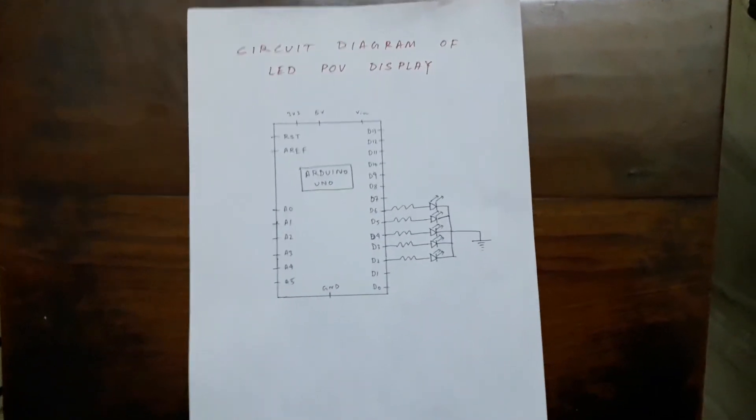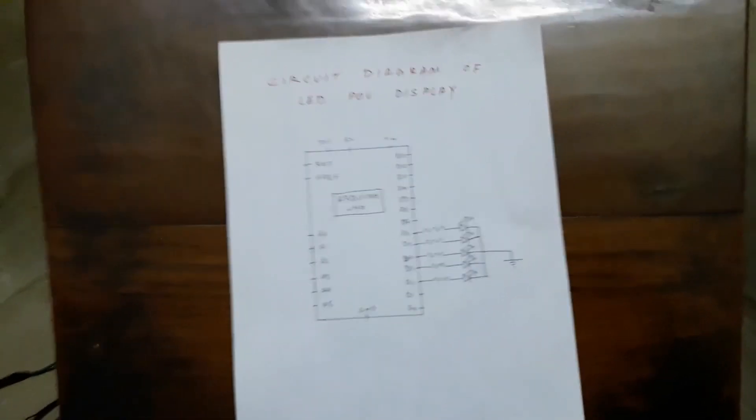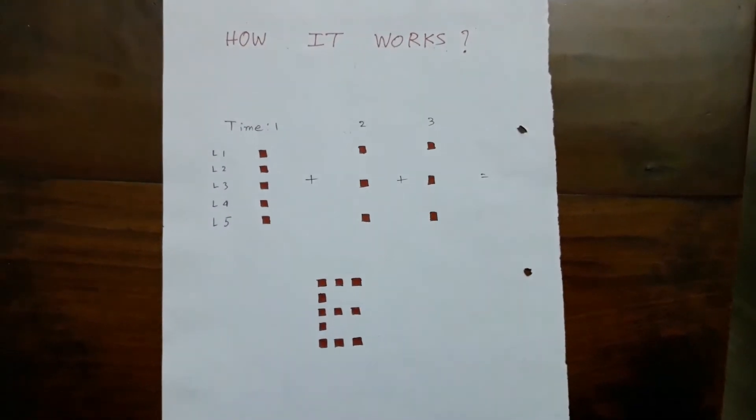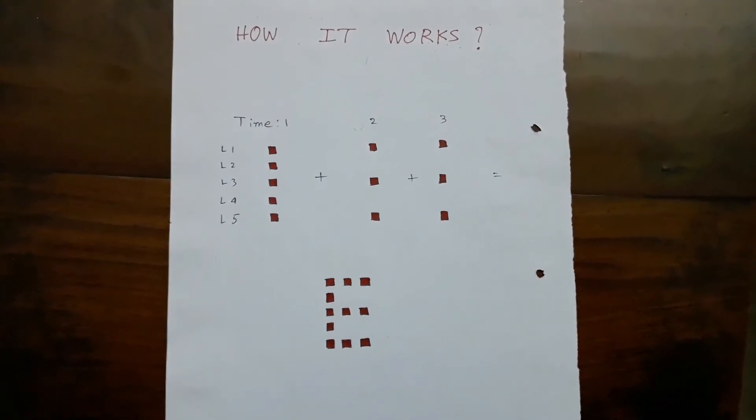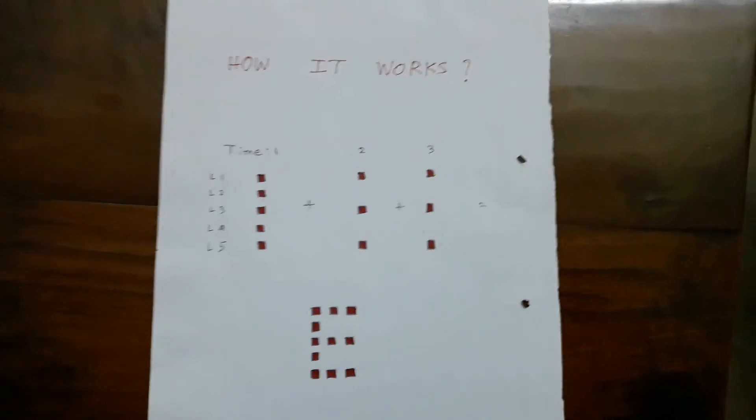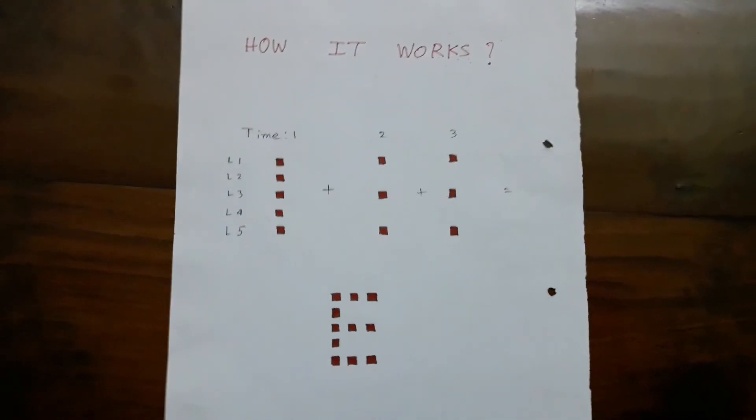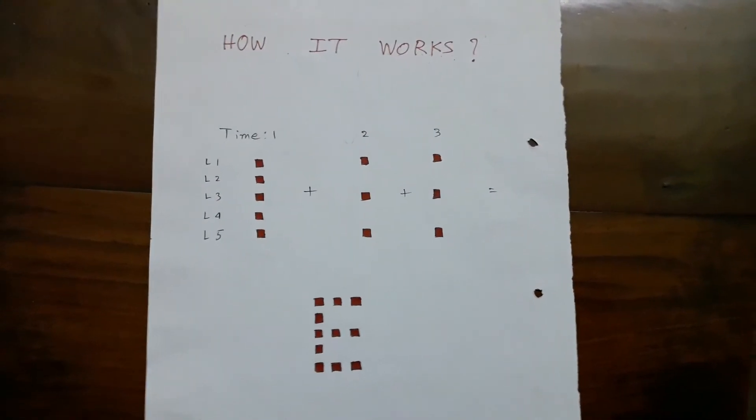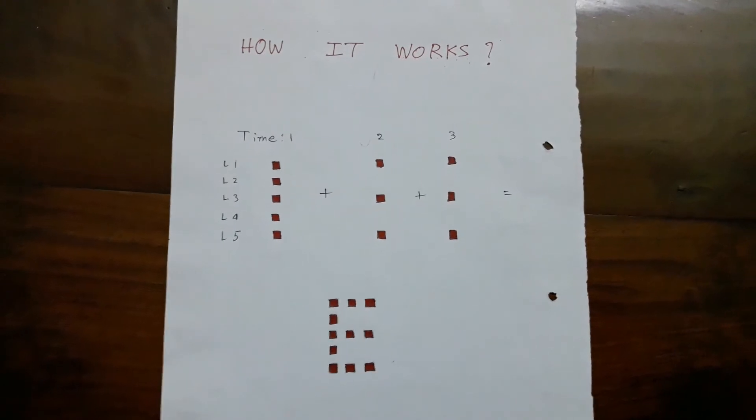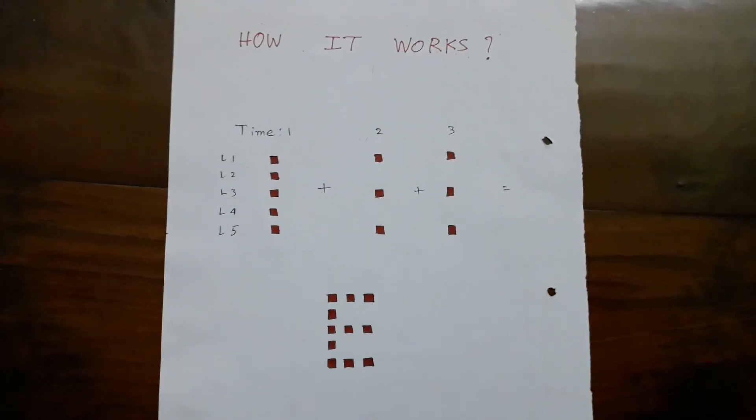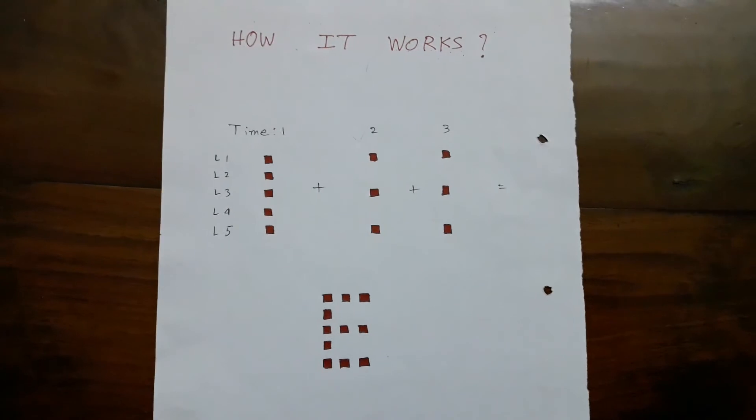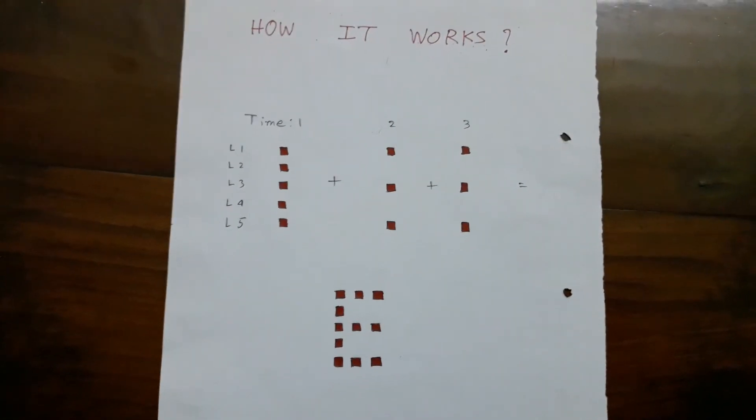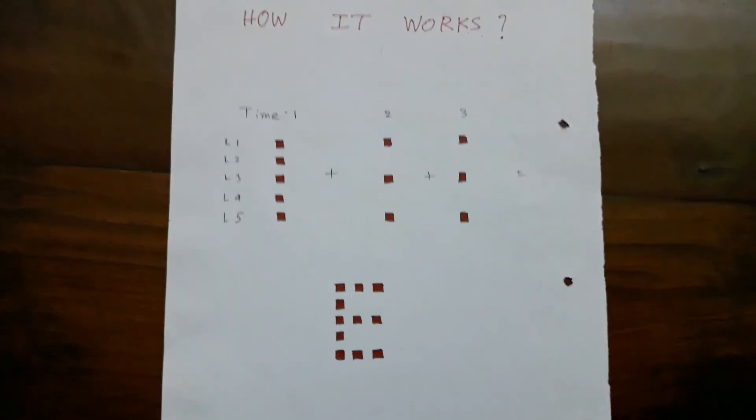Now how does this POV work? Suppose you want to see 'E' on this POV display. At time T equals 1, all the LEDs glow—L1, L2, L3, L4, and L5. When T equals 2, the first, third, and fifth LEDs glow. When T equals 3, the first, third, and fifth LEDs glow. When these glowing positions superimpose over one another, we get 'E' on the LED POV display.